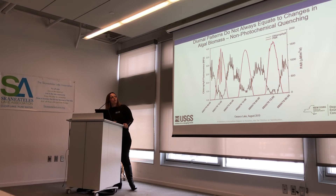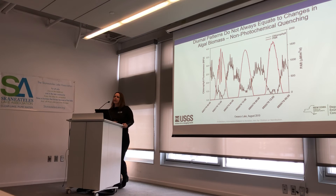Just because you see diurnal variability does not necessarily mean your algal biomass is changing. Here the black line is chlorophyll fluorescence and red is light intensity — you can see a pretty nice inverse relationship there. Our fluorescent sensors do have value and utility, but we need to be cautious in how we interpret those data and look at patterns over time and with respect to other data.